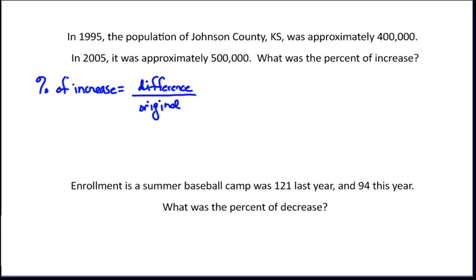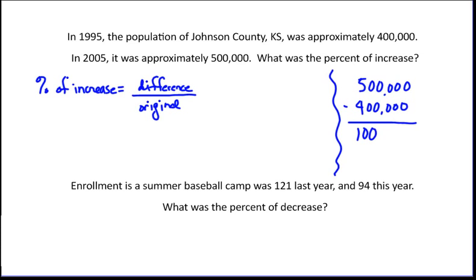So what we need to do is find the difference in the populations. Over here I will do a little messy work. I will take 500,000 and subtract 400,000, finding out that they differed by 100,000. So that will be the numerator of our fraction.